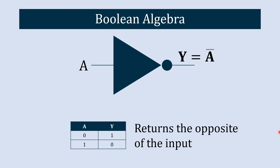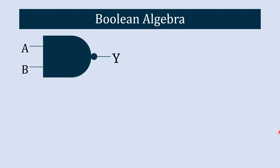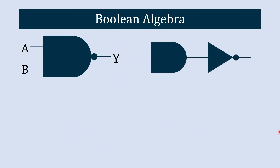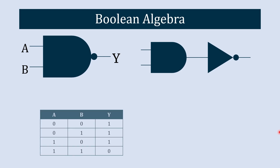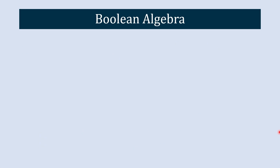For the NOT operator, if the input is one the output is zero, and if the input is zero the output is one. The next operator is the NAND operator. It is the combination of AND followed by NOT. This operator returns false or zero if both inputs are true or one.